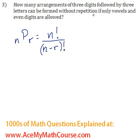How many arrangements of three digits followed by three letters can be formed without repetition if only vowels and even digits are allowed?